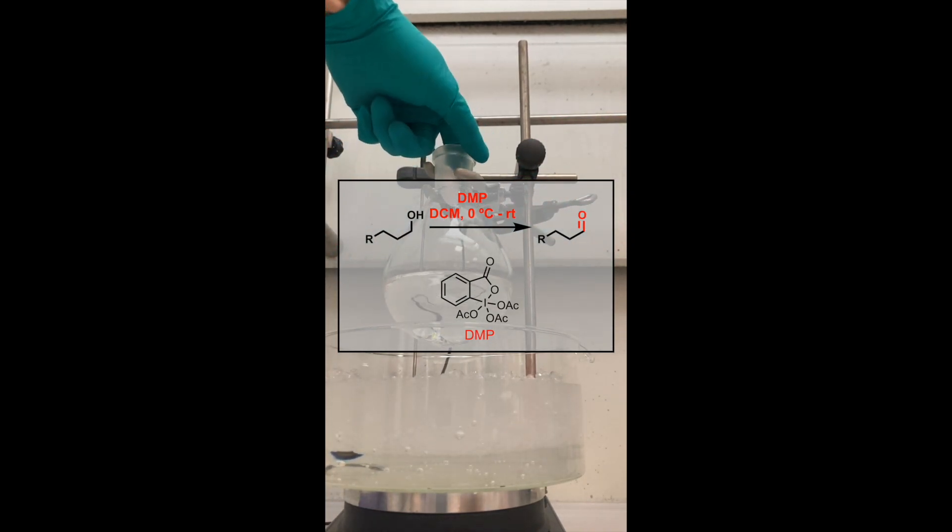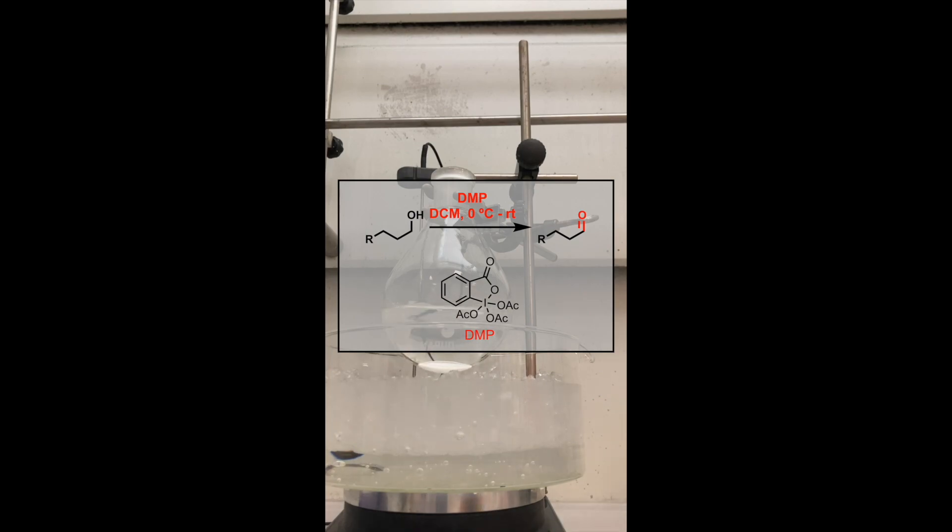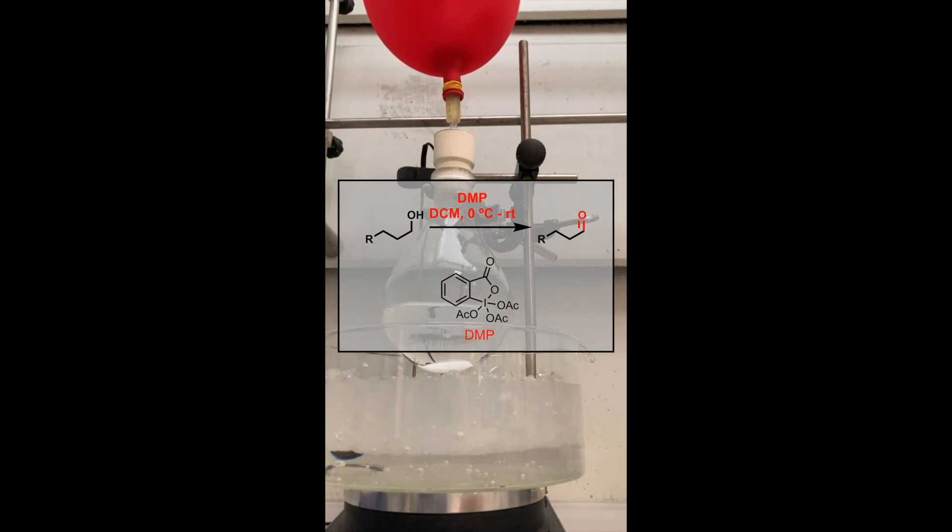This oxidation is typically performed in dichloromethane or chloroform at room temperature and is typically completed within two hours. The products are easily separated from the iodocompound byproduct after a basic workup.